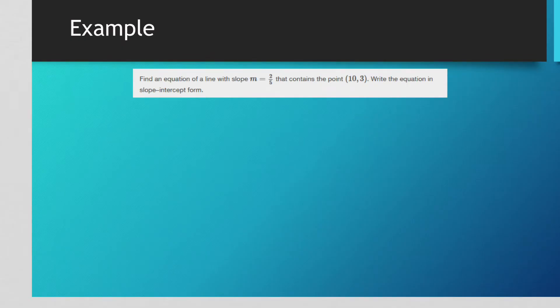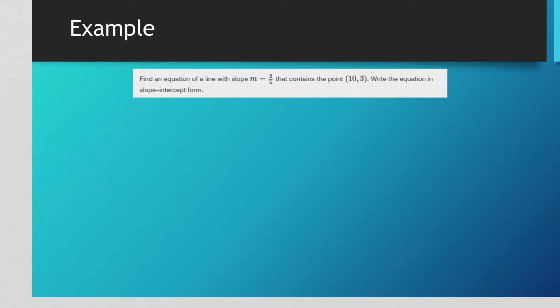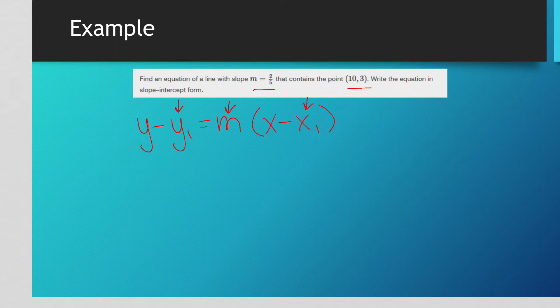Let's look at an example. This says, find an equation of a line with a slope of m is 2/5 and the point, it contains the point (10, 3). You've seen this example before, by the way, it was in the last video. So this time I'm going to do it using the point slope form, not the slope intercept. And the point slope formula is where we substitute in this, this, and this.